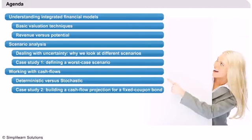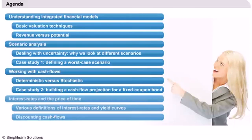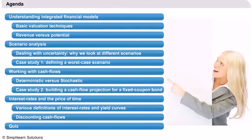We will introduce the concept of probability distributions and illustrate the topic through the cash flow projection and valuation of a coupon bond. Finally, we will define the concept of interest rate, provide the various types and definitions of interest rate, explain what a yield curve is, and discuss how yield curves are used in the task of discounting cash flows.